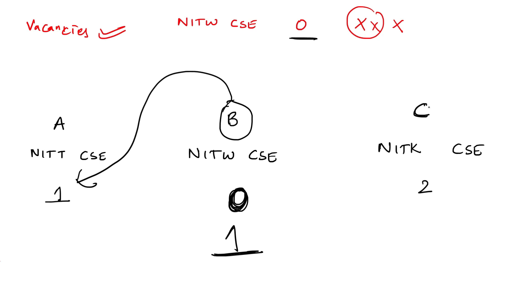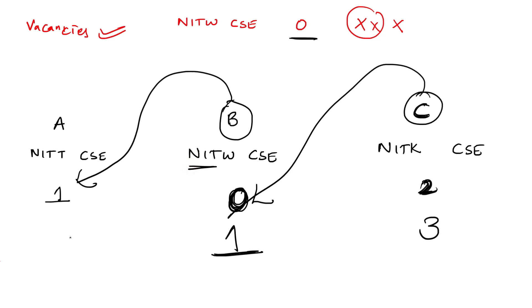If Student C moves to NIT Warangal CSE, the previously zero vacancies become one, and if the previous student also moves, the count changes dynamically. Vacancies are not static — they shift as students upgrade their allotments. So don't blindly follow the vacancy count. Fill your choices based on your interest, rank, and preferences. The counseling system allows you to fill any choice regardless of current vacancy count, because seats open up dynamically as students move.